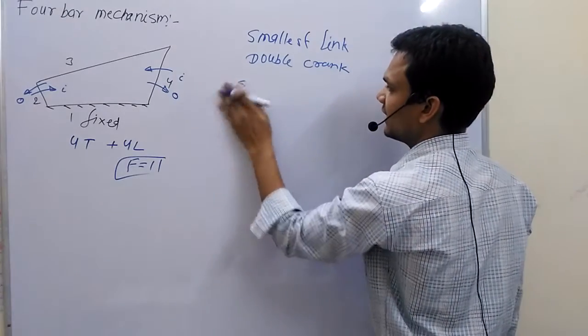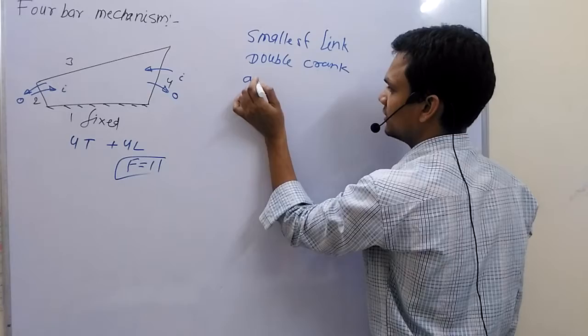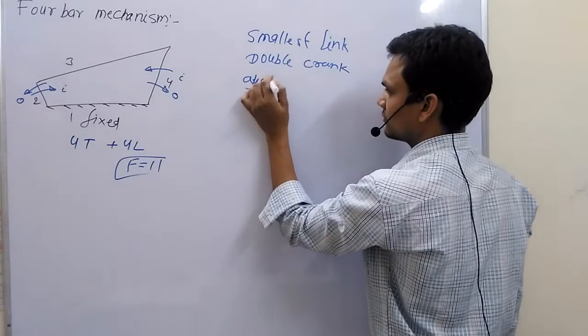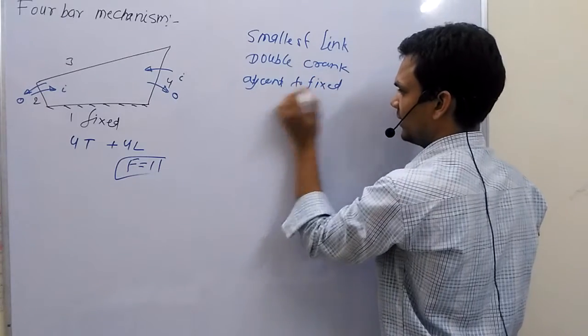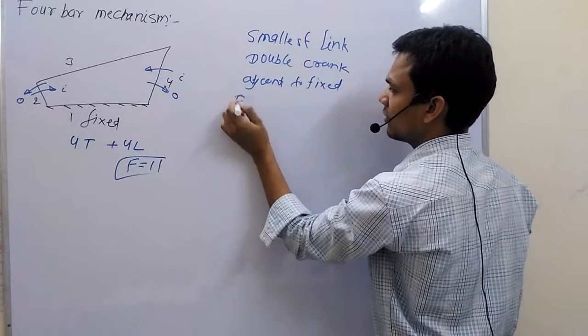If we take smallest link adjacent to fix, we obtain crank rocker mechanism.